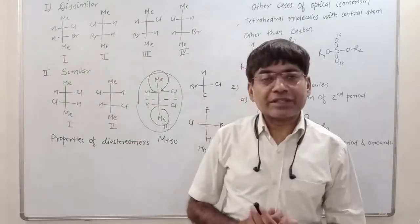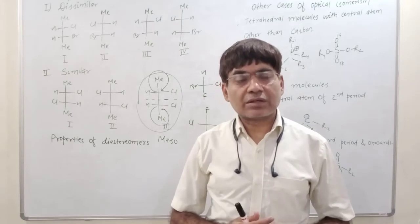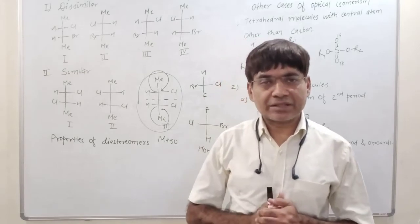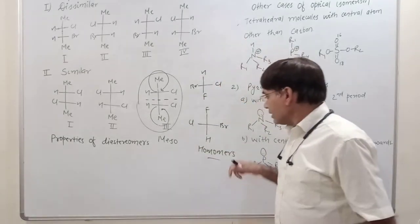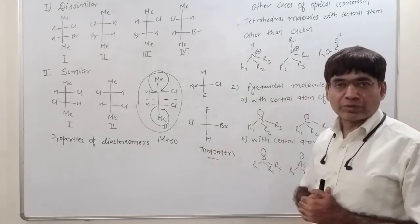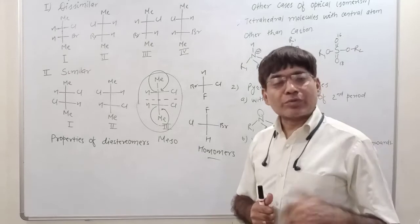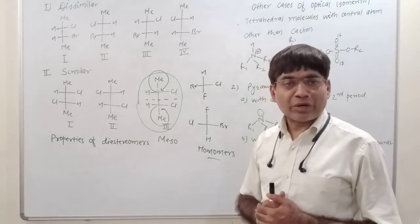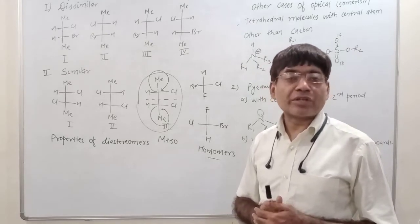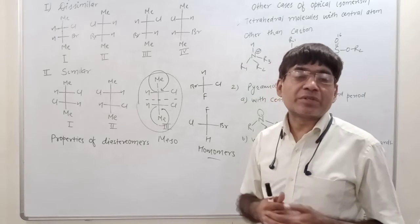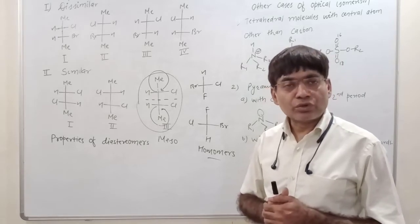The next thing we have seen is compounds with two chiral centers. We have seen this term, homomers. What is homomers? Homomers are nothing but the same compound. It is exactly the same molecule which has been represented stereochemically in two different ways.